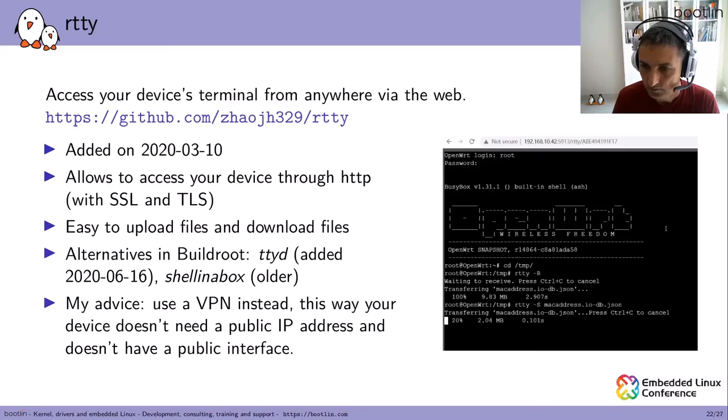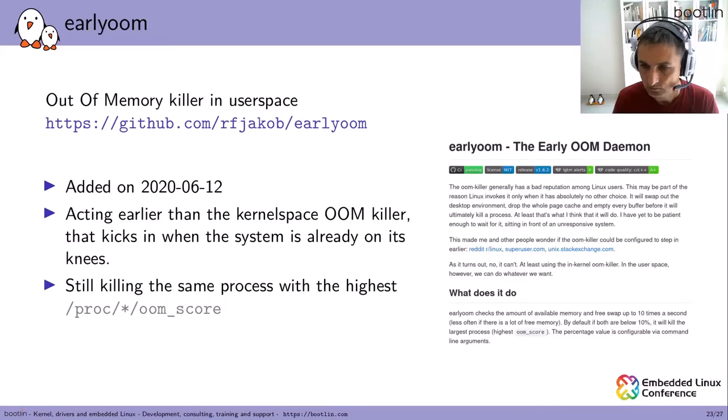We are reaching the end of the list now. The last one I want to mention is EarlyOOM, an out-of-memory killer in user space. It acts earlier than the kernel-space OOM killer, which kicks in really at the last minute when the system is already on its knees. It runs periodically and watches available memory, and if it's lower than 10% it kills the process with the highest OOM score in /proc/PID/oom_score. It's a nice alternative if you want to keep the interactivity and responsiveness of the system.